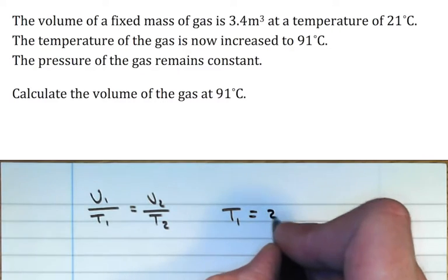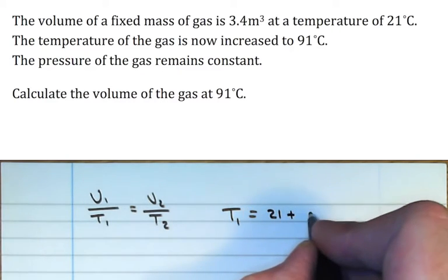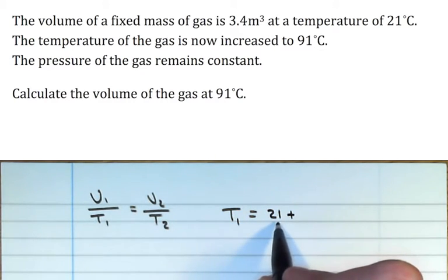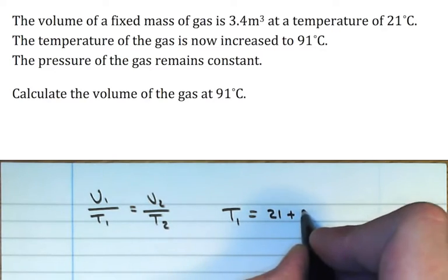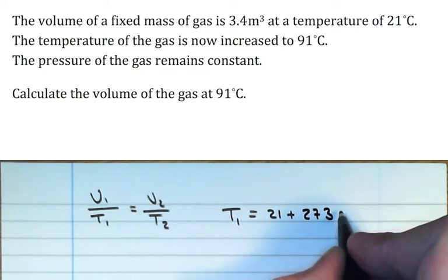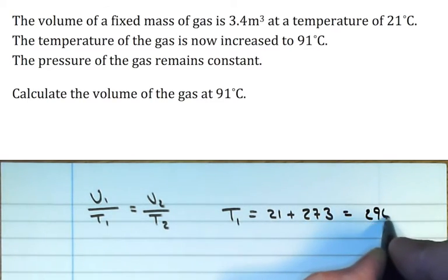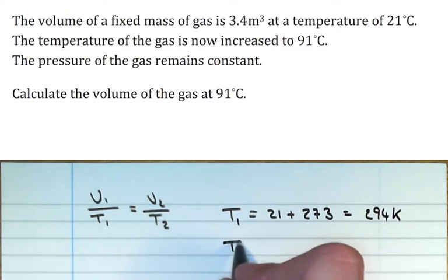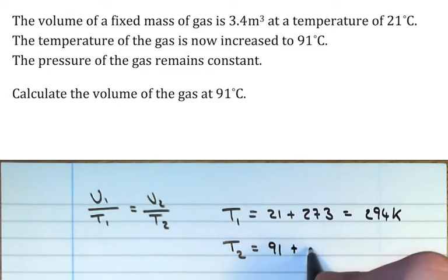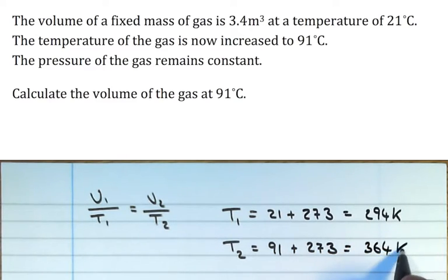So what I would actually do in a separate step is to work these out. Going from degrees Celsius to Kelvin, as I said last time, we just add 273. So 21 plus 273 gives us an initial temperature of 294 Kelvin, and a final temperature of 91, just do exactly the same, add 273, and that gives us 364 Kelvin.